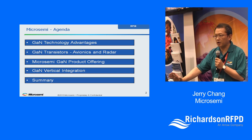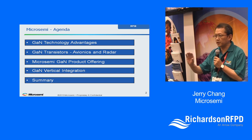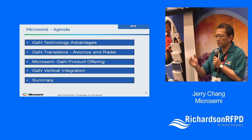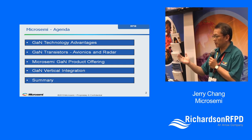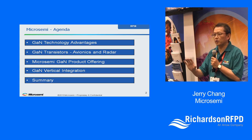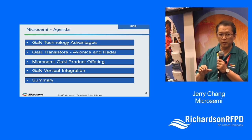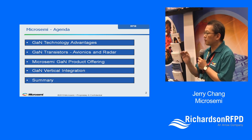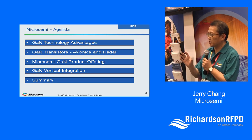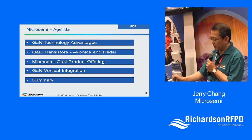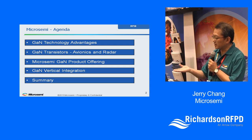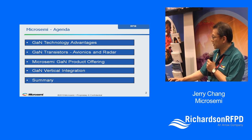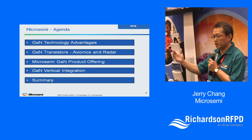Here's the agenda. First, we will briefly go over the GaN technology advantages. Then we're going to look at the GaN transistors we developed for avionics and radar markets. We're releasing 24 brand new power transistors this year — high power, driver stages, the full lineup for avionics and radar markets. We'll also look at MicroSemi's vertical integration and do a quick summary. If you have any questions, feel free to ask.